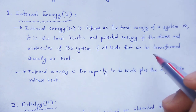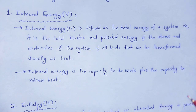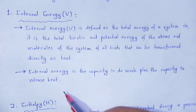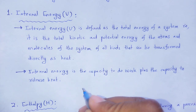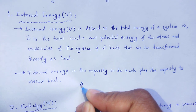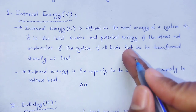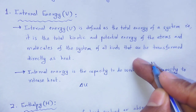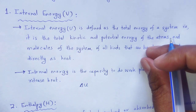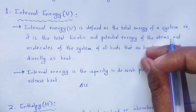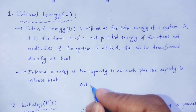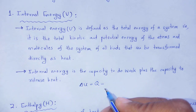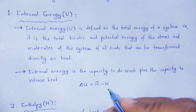Physically, internal energy is the capacity to do work plus the capacity to release heat. Mathematically, the change in internal energy, del U, equals the amount of heat added to the system minus the work done by the system. This is the first law of thermodynamics: del U equals Q minus W, where Q is the heat added to the system and W is the work done by the system.